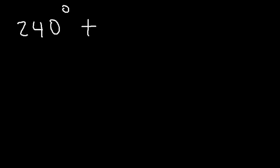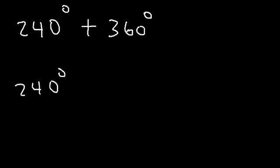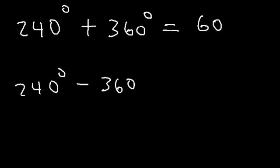Let's try another example. Go ahead and find the positive and negative coterminal angle of 240 degrees. All you have to do is add 360 and take away 360. So 240 plus 360 is 600 degrees, and 240 minus 360 is negative 120 degrees.